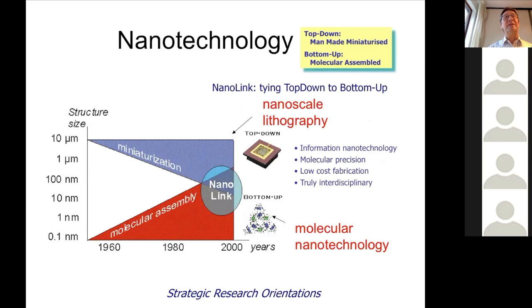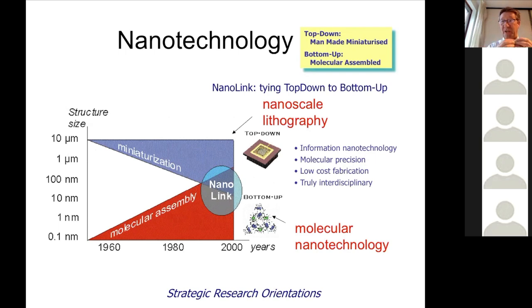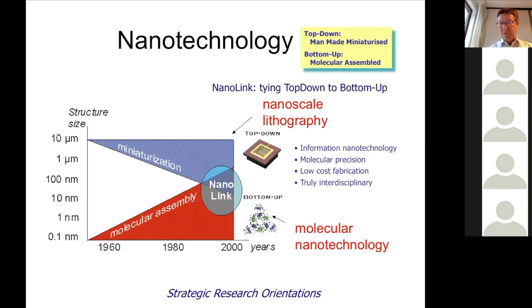Nanotechnology is also related to two methods: top-down and bottom-up. Top-down is basically lithography — if you take a large material and start cutting it smaller and smaller, you can make very, very small objects using light. The other way is bottom-up: using molecules to organize structures and thereby reach perhaps the same dimension. So we have nanoscale lithography going from bulk to smaller, and we have the molecular bottom-up approach — making small structures from molecules.